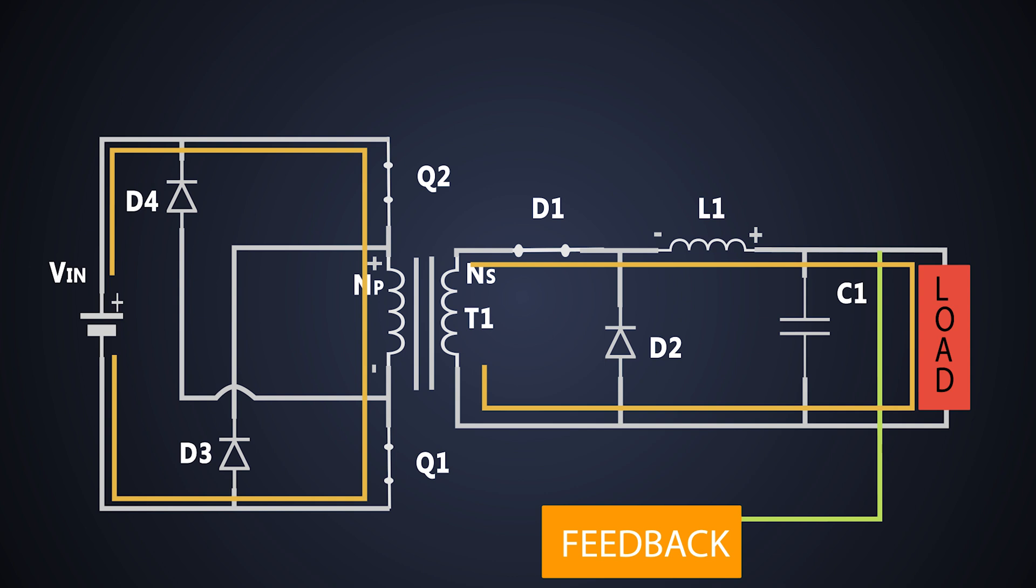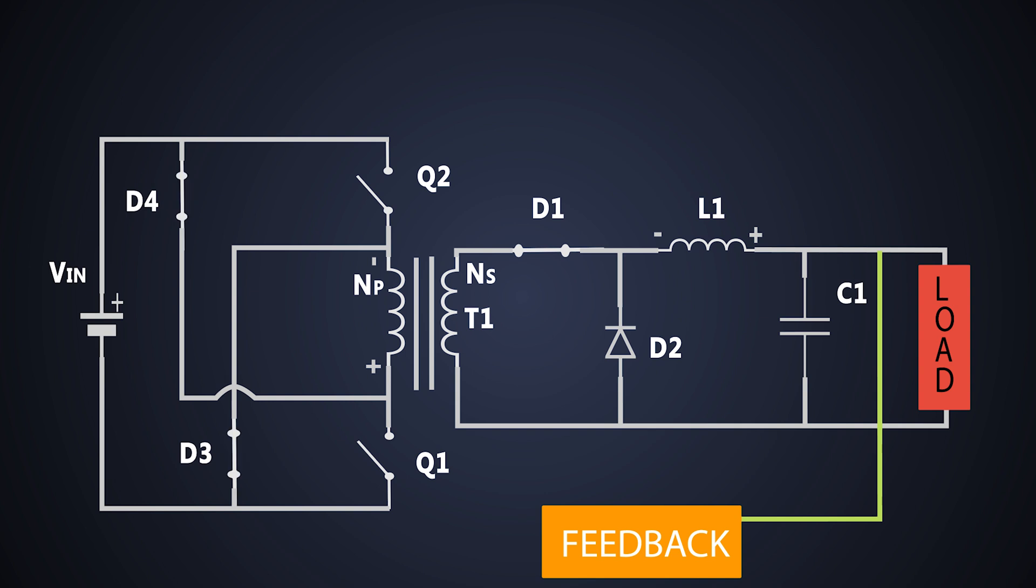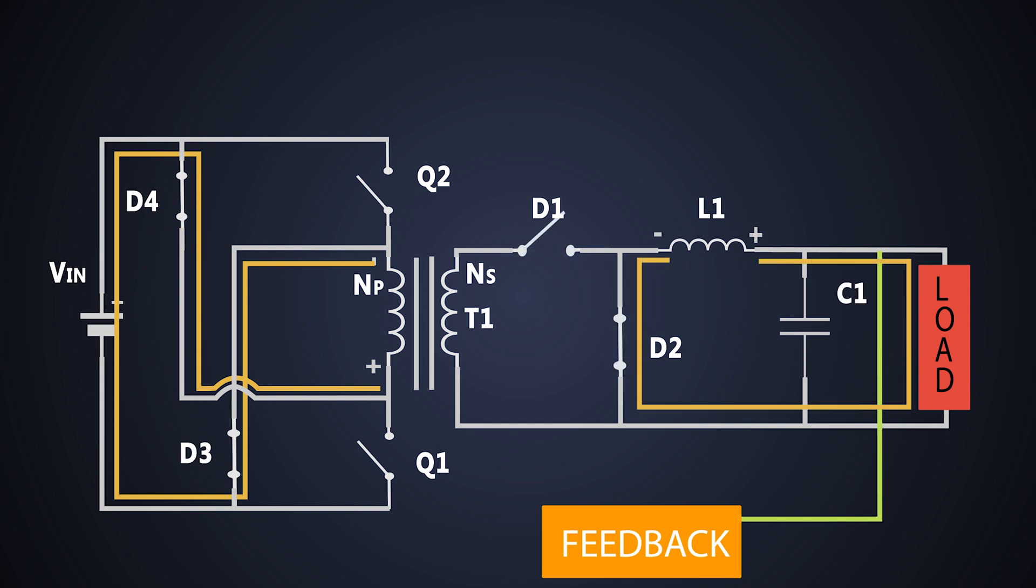When both MOSFETs are turned off, the polarity of the transformer primary winding is reversed, and the diodes D3 and D4 are forward biased, and the residual energy is fed back into the supply. These diodes conduct until all the magnetizing energy in the primary is returned into the input supply. Since diodes D3 and D4 clamp the input voltage, there is no need of a snubber circuit in this converter. On the secondary side, the freewheeling diode D2 and inductor do their job and provide power to the output load.